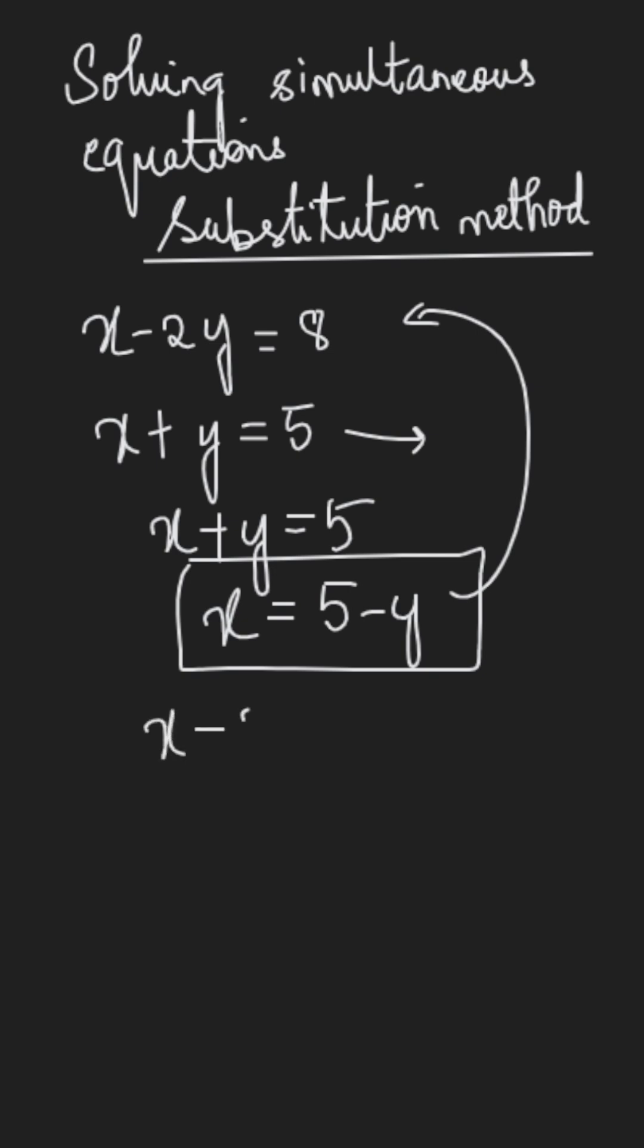Now I am choosing the first equation which is x minus 2y equal to 8. The value of x is 5 minus y. I am putting it here which is 5 minus y minus 2y equal to 8 which gives us 5 minus 3y equal to 8.